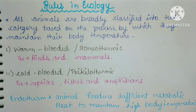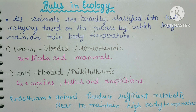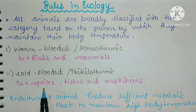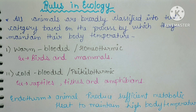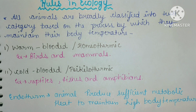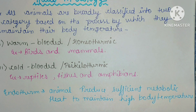Next, we have cold-blooded or poikilothermic animals. Their body temperature changes according to the outside environment temperature. Examples include reptiles, fishes, and amphibians.